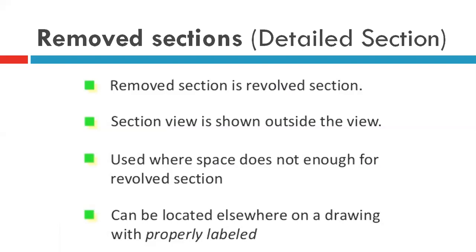In that case we can show the section outside the figure with the help of a scale. If the dimensions are very small, we can enlarge; if the dimensions are too large, we can show it at a reduced scale. The fourth point: it can be located elsewhere on a drawing, properly labeled — because sometimes more than one section can be shown in a drawing using removed sections, so proper naming convention is very important.